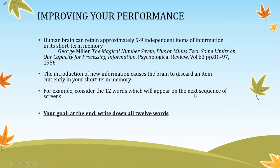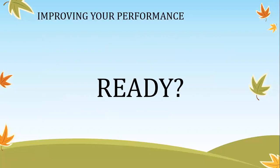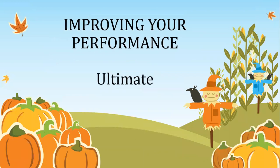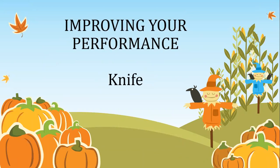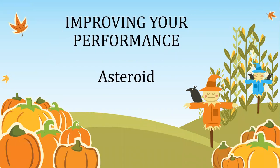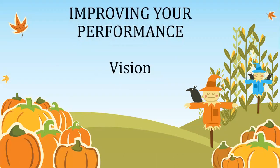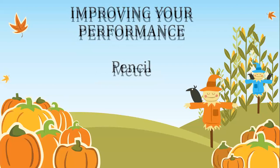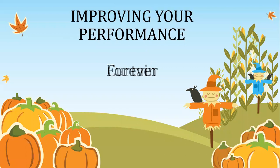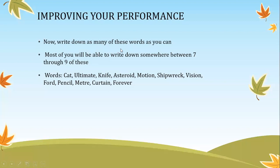For example, I will show you 12 words which will appear on the next slide. Your goal is to write down all 12 words at the end, after you have been shown all of them. You can write them in any order. The words were: cat, ultimate, knife, asteroid, motion, shipwreck, vision, pencil, metric, carting, forever. Most of you will be able to write down somewhere between seven to nine of the 12 words.